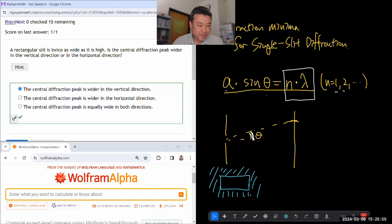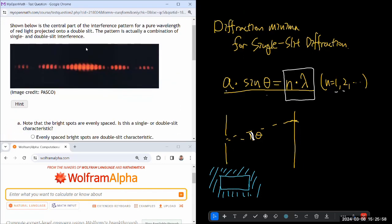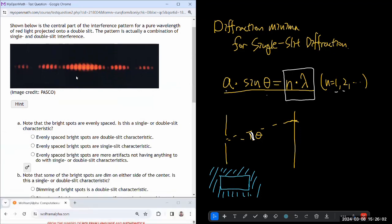Okay, last reading check question. Shown below is the central part of the interference pattern projected in the double slit, actually a combination of a single slit diffraction and double slit interference. I think your textbook calls it double slit diffraction, which I think is fine. Note that the bright spots are evenly spaced. Is this a single or double slit characteristic? It is a double slit characteristic.